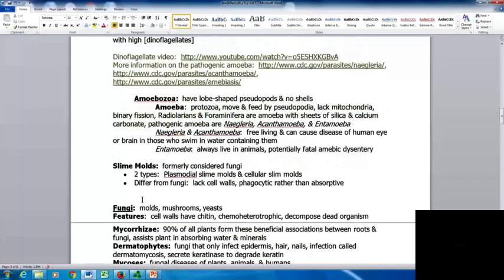The Entamoeba always live in animals and can cause potentially fatal amoebic dysentery. The slime molds were formally considered fungi. There's two types: plasmodial slime molds and cellular slime molds. They differ from fungi - they lack cell walls and are phagocytic rather than absorptive.